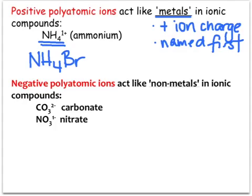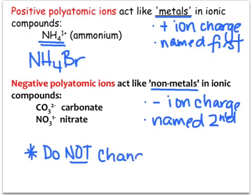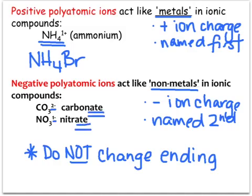Negative polyatomic ions act like nonmetals — they all have a negative ion charge and are named second. Here's the key difference between ionic compounds without polyatomic ions and those with them: we do not change the ending of polyatomic ions. Before, we were always dropping the ending and adding IDE. All of these negative polyatomic ions named last are just as they are written on the list of polyatomic ions.